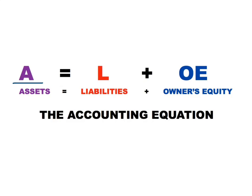All of the assets of the business must be paid for, and there are only two ways in which they can be paid for: it comes from money from outside the business — liabilities — or money from inside the business — owner's equity. So all of the business's assets are paid for through either liabilities or owner's equity, and that's why the two sides are always going to be in balance.